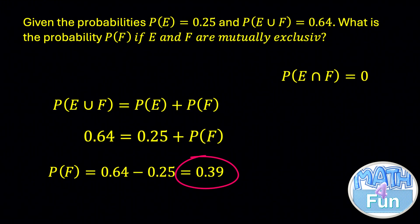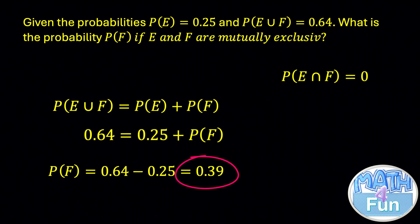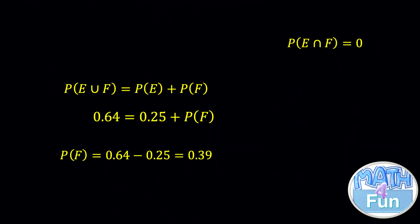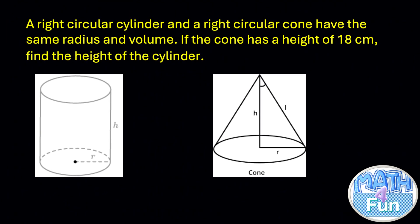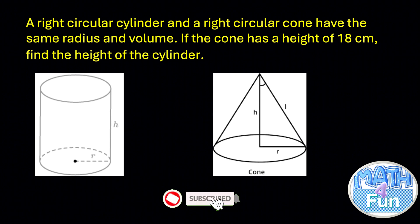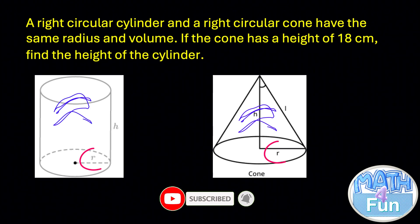Let's see this question. A right circular cylinder and a right circular cone have the same radius and volume. If the cone has a height of 18 centimeters, find the height of the cylinder.